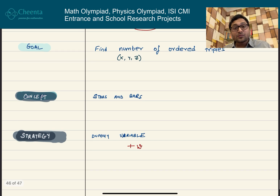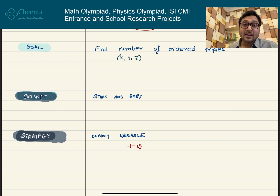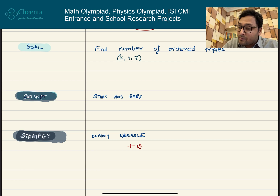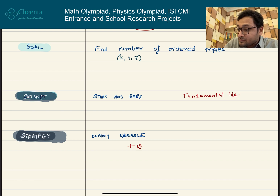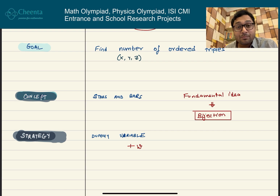The underlying concept we will use is called the stars and bars method. We have discussed it before in other videos on this channel — it's covered in the combinatorics module at Chinta's mathematics olympiad program. It is a very powerful tool, and the underlying fundamental idea is bijection. I will not discuss bijection in detail here, but I will talk about the stars and bars method.